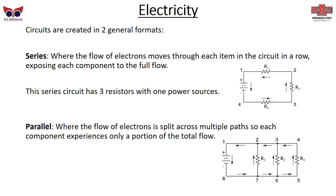Circuits are created in two general formats. In a series circuit, the flow of electrons goes through each item in the circuit in a row, so every piece is exposed to the full flow — a series circuit with three resistors means every resistor gets the full flow of power. In a parallel circuit, if you have the same three resistors arranged side by side, the flow of electrons is split into thirds, so each resistor only gets one-third of the total flow.